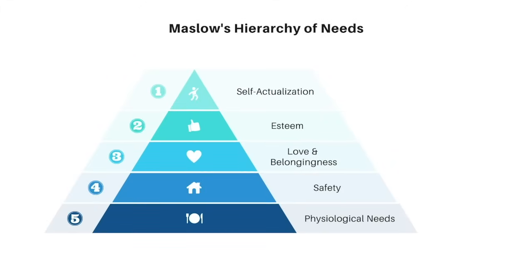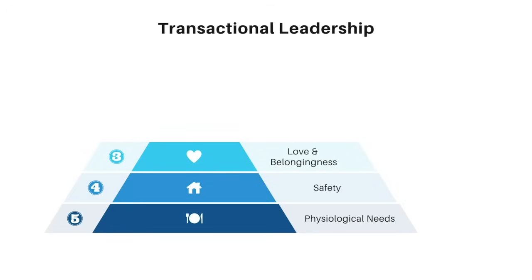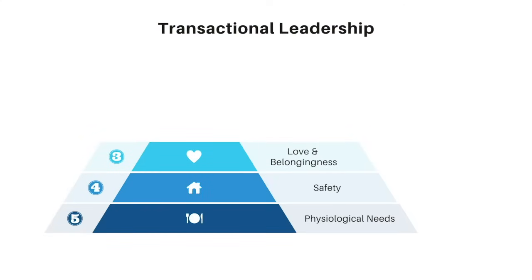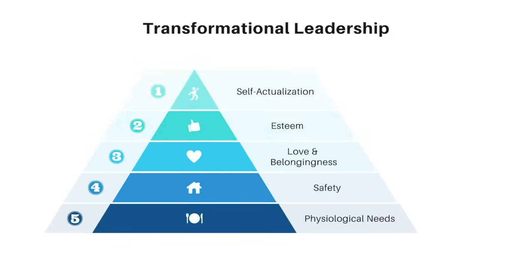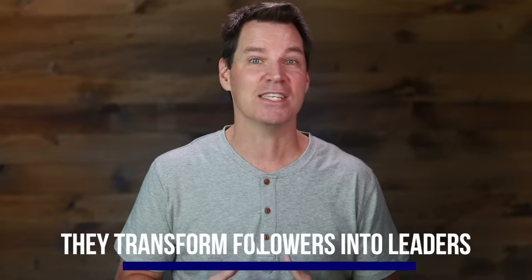Transactional leadership is where a leader is mainly concerned with helping followers meet their lower-level needs — satisfying followers' psychological, safety, and belonging needs. In exchange for followers' hard work, transactional leaders help followers secure these rewards. Transformational leaders take that to the next level and attempt to engage the entire person — satisfying followers' lower-level needs and also their higher-level needs on Maslow's hierarchy: esteem and self-actualization. According to Burns, transformational leaders enhance followers' level of motivation, commitment, and ownership. Ultimately, this transforms followers into leaders themselves.